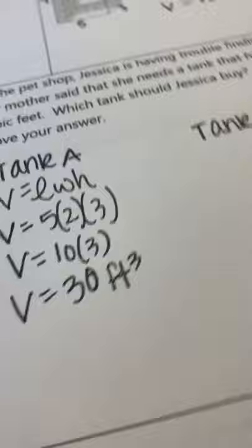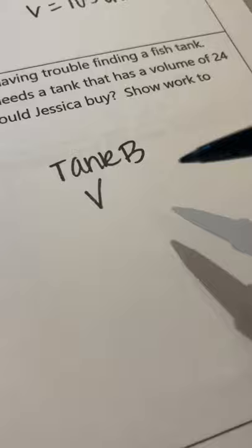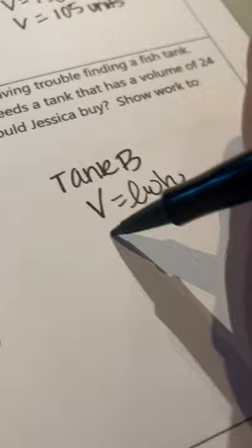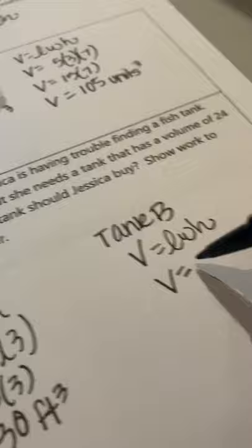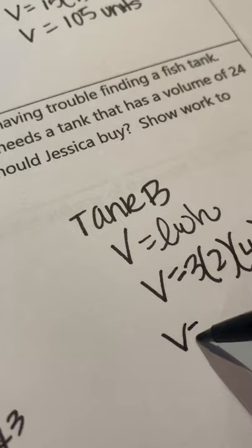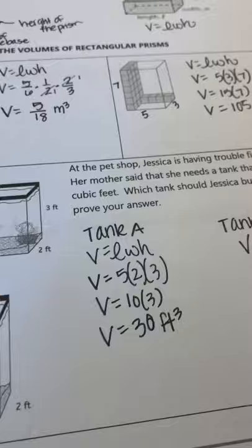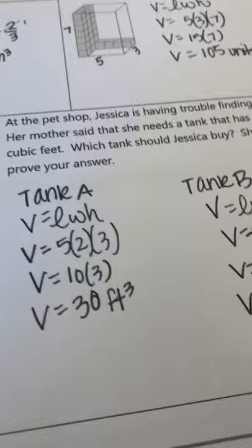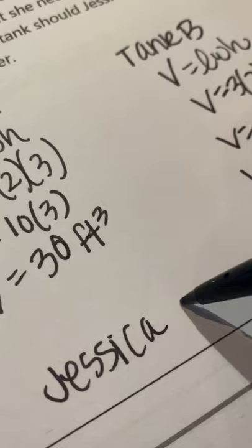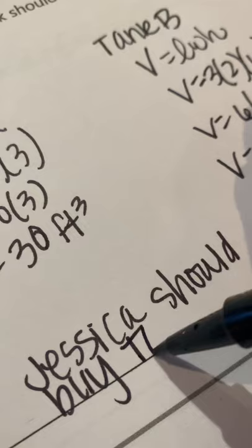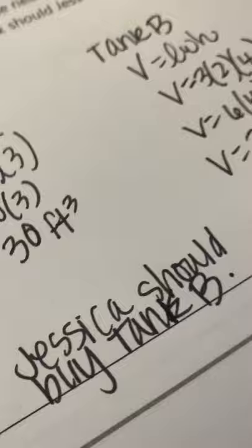Let's look at tank 2, or tank B rather. It's a rectangular prism. So volume is length times width times height. Put in the dimensions. And if you come back to the picture, you can see it's 3 by 2 by 4. So you have 6 times 4, which is 24 cubic feet. So then in answer to the question, which tank should Jessica buy, you would just write that Jessica should buy tank B because it matches the dimensions that her mother wants for volume. And the other one would be too big of a tank. It's too much water.